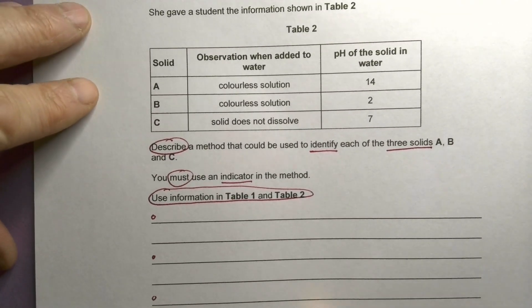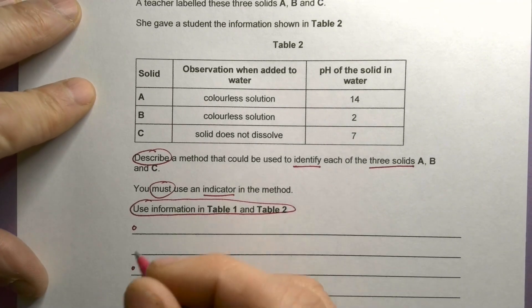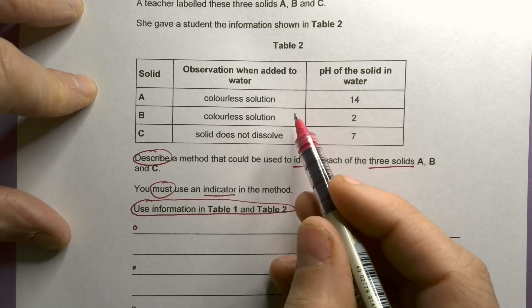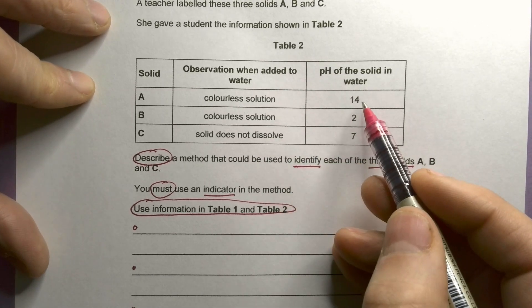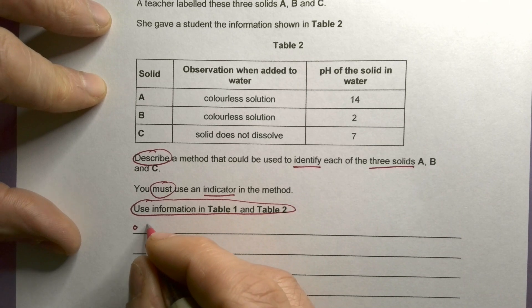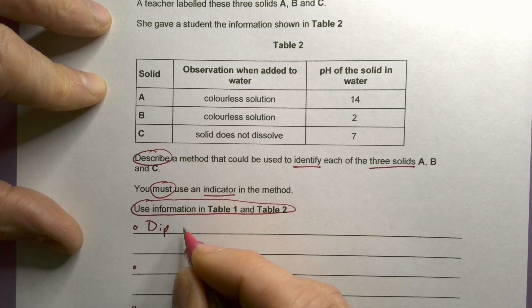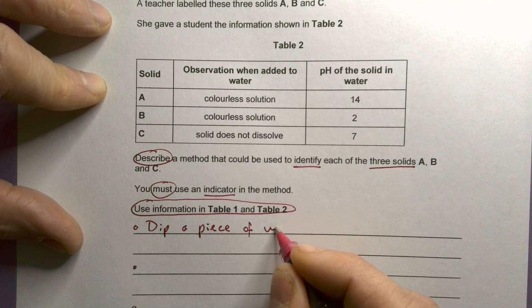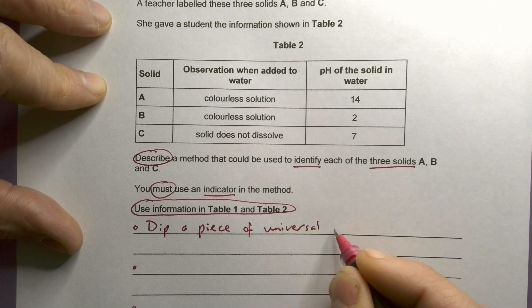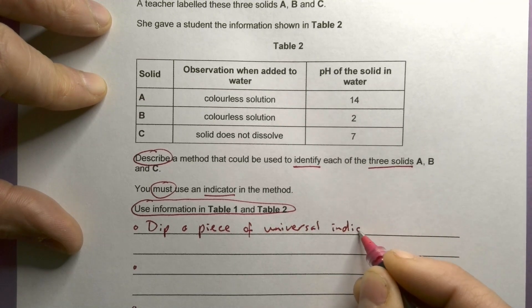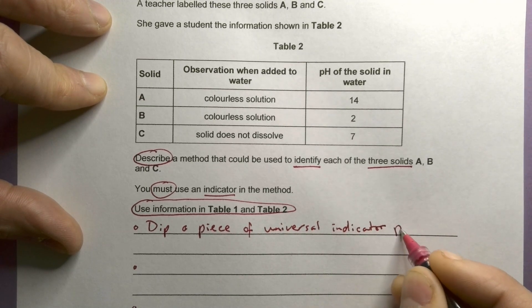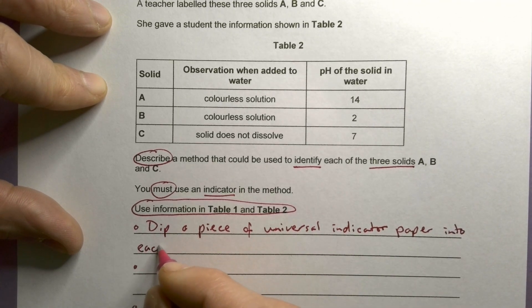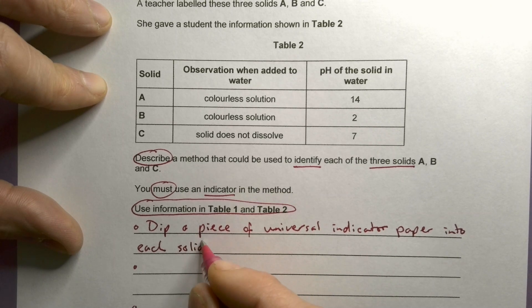Okay, well, I've got to use an indicator, so let's start off with that. I've got to name my indicator as well. So I've got pH of the solid in water. So I'm going to dip a piece of universal indicator paper into each solid in water.